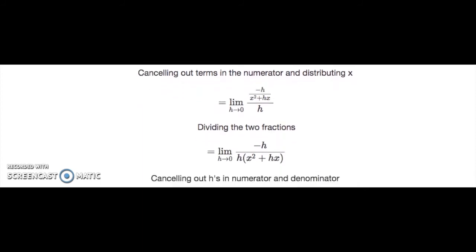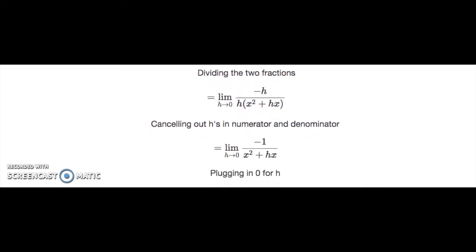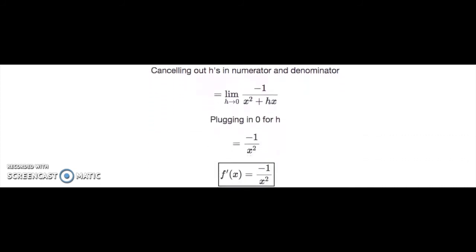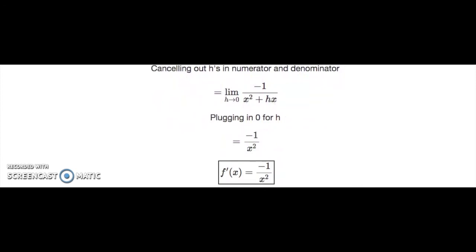We get the limit as h goes to 0 of minus h over (x² + hx) all over h. Dividing the two fractions — multiplying by the reciprocal of h — gives the limit as h goes to 0 of minus h over h times (x² + hx). Canceling the h's in the numerator and denominator leaves minus 1 in the numerator. Plugging in 0 for h gives minus 1 over x². Thus, the derivative of 1/x is minus 1 over x².